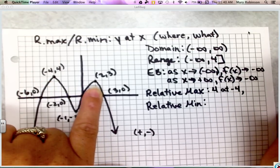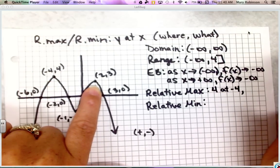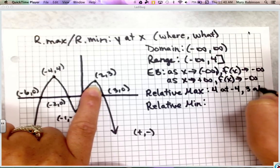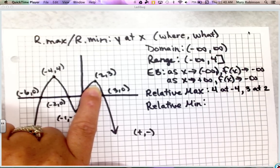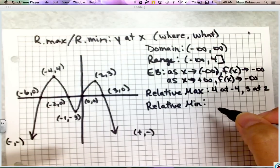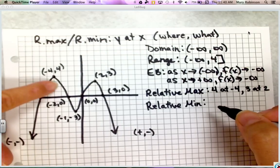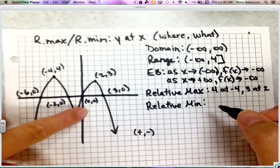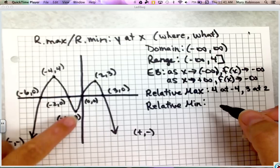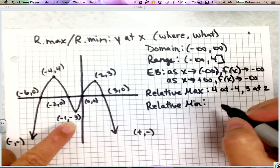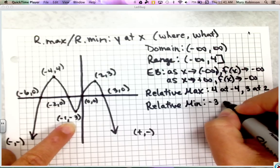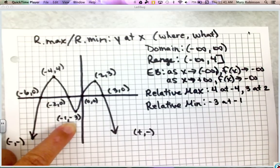We have another relative max on the right side, which we state as 3 at 2. Now for our relative min — where there's a turning point where the graph changes from decreasing to increasing — we state this as y at x, so negative 3 at negative 1.